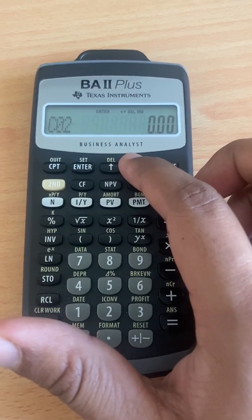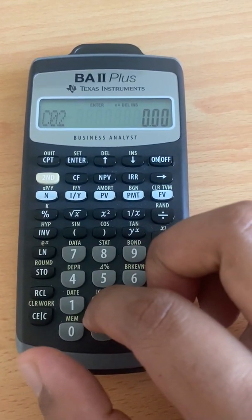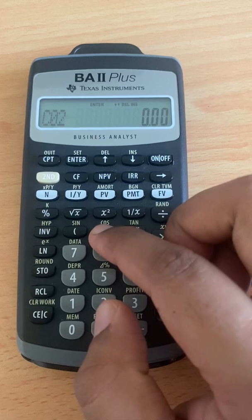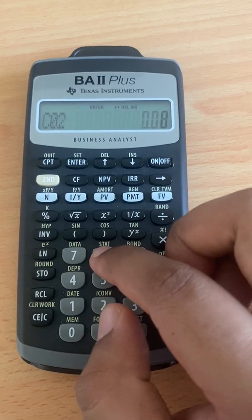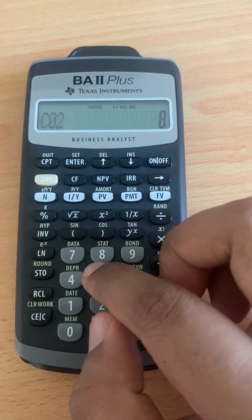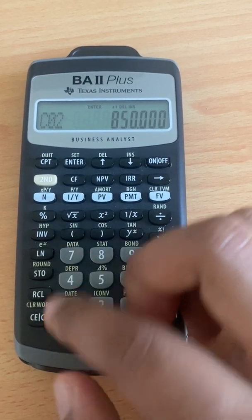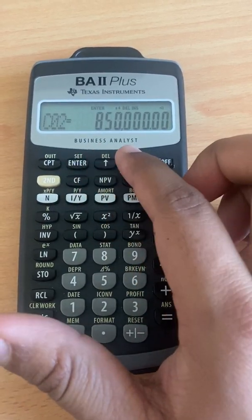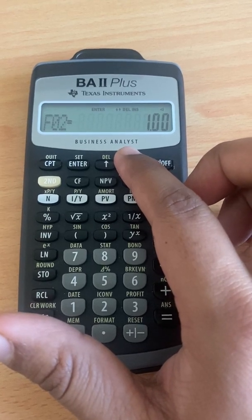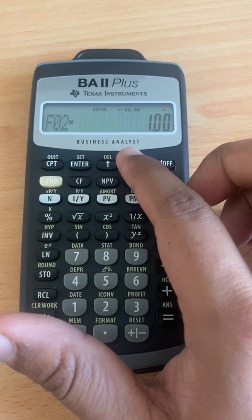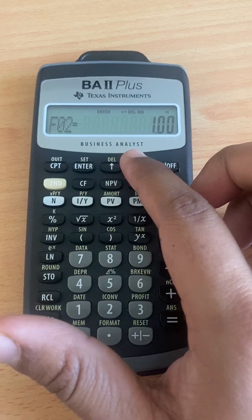Then we go for the second cash flow, 8,500,000. You press enter, and then F02 is frequency 2. Nothing to check.